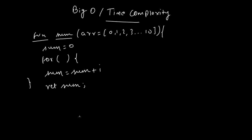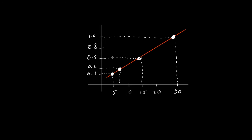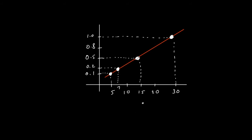I did a little experiment to show how runtime increases as we increase input size. Here is a graph: on the x-axis we have the number of elements in the array, and on the y-axis we have the time in seconds. When input size is 5 it took 0.1 seconds, input size 7 took 0.2 seconds, size 15 took 0.5 seconds, and size 30 took 1 second.